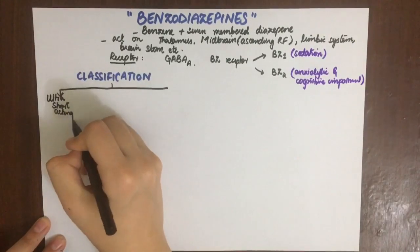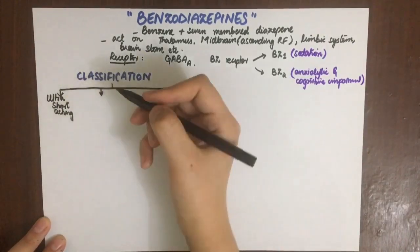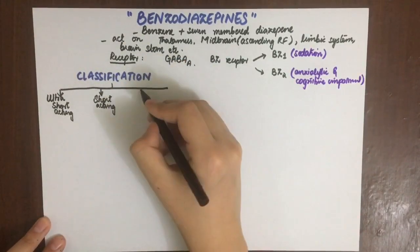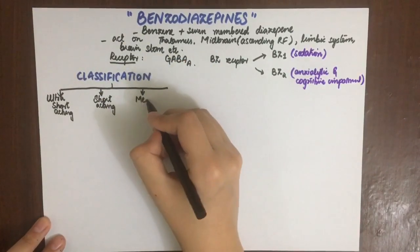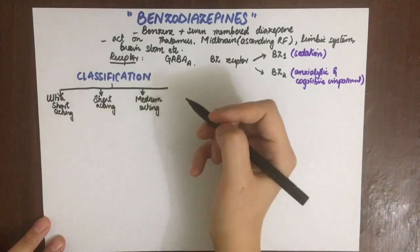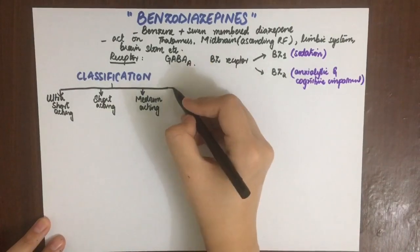Let's do some classification. Benzodiazepines are divided into four groups: ultra-short acting, short acting, medium acting, and long acting.